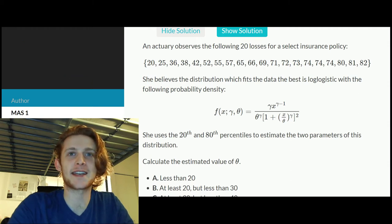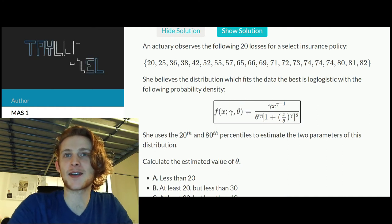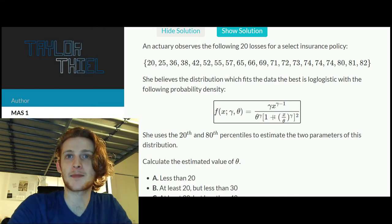So the very first thing that really annoys me about this problem is how they chose to show the PDF. In this question, it ends up working out to be the exact same thing, but you'll notice there's this theta to the power of gamma in the denominator.